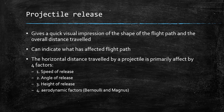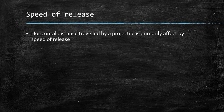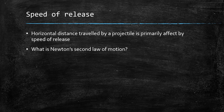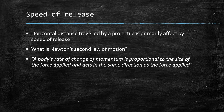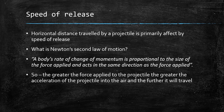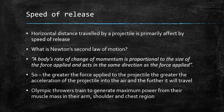We are going to look at the first three in this video. The horizontal distance travelled by a projectile is primarily affected by the speed of release — the faster you release it, the greater it's going to go. Newton's second law of motion states that a body's rate of change of momentum is proportional to the size of the force applied and acts in the same direction as the force applied. The greater force applied to the projectile when we throw it, the greater the acceleration and the further it will travel. Olympic throwers will train to generate maximum power from their muscle mass in their arm, shoulder and chest region to try and transfer as much force into that projectile as possible upon release.